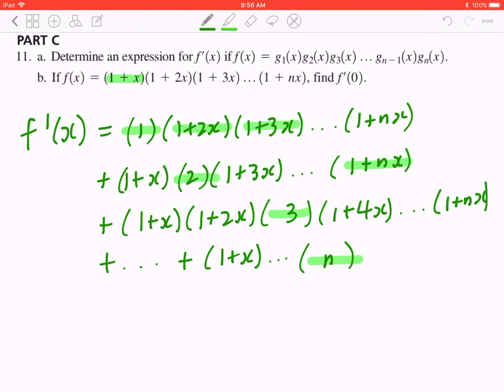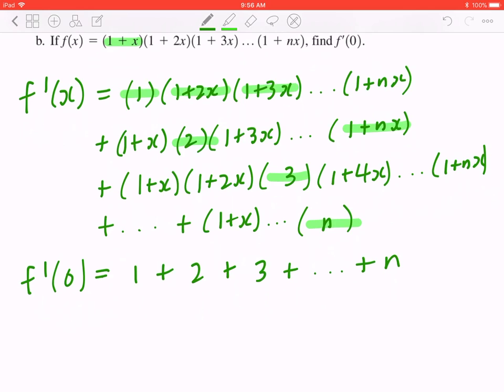Now, your goal is not to find f prime of x. Your goal is to find f prime of 0. So you can go back, plug it in, and what happens is this equals to 1 plus 2 plus 3 all the way to the final term, n. Make sure you plug in x to be 0, and you can see all the remaining terms.